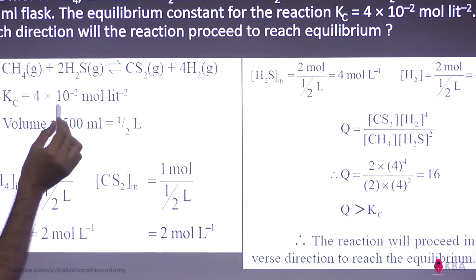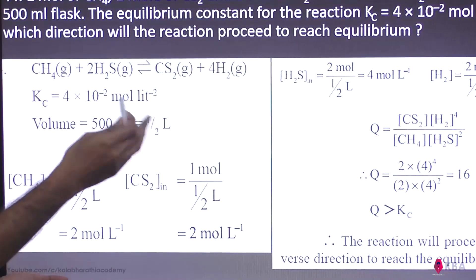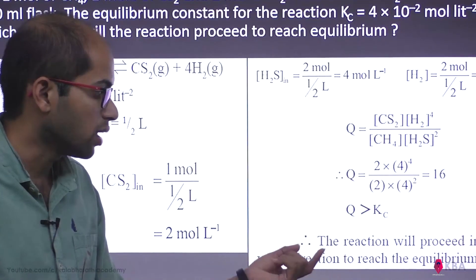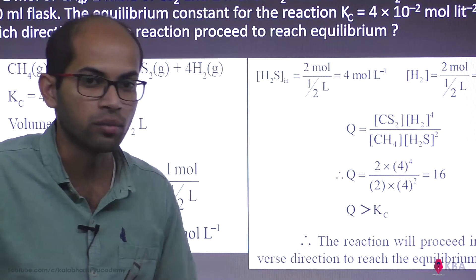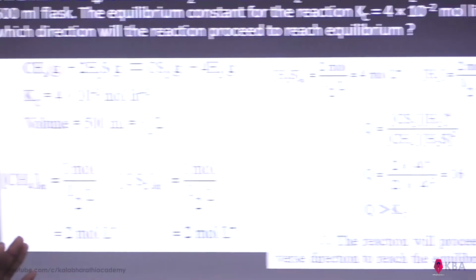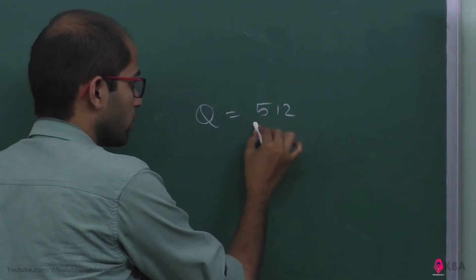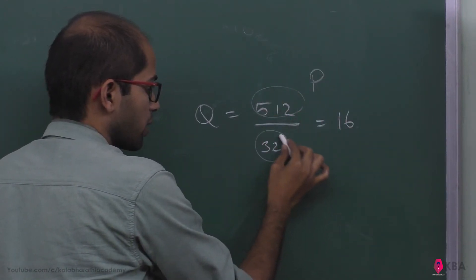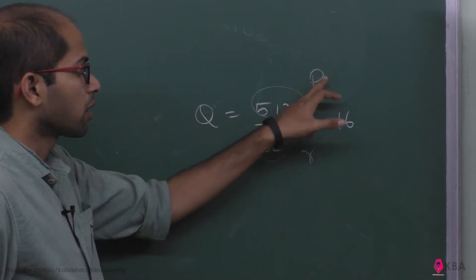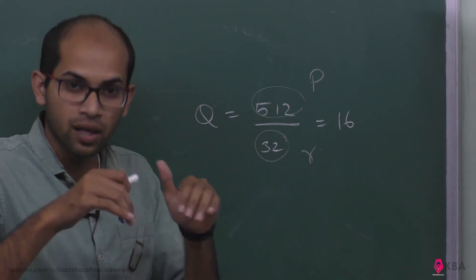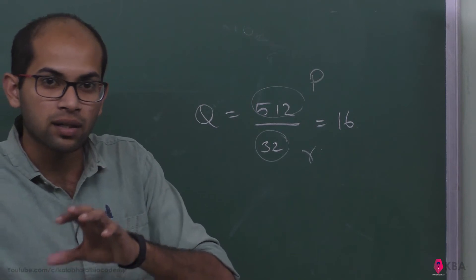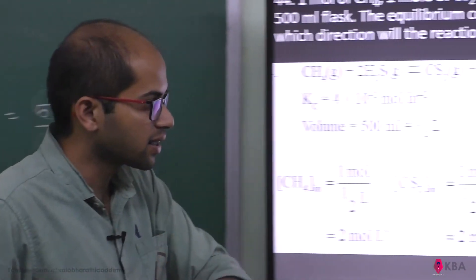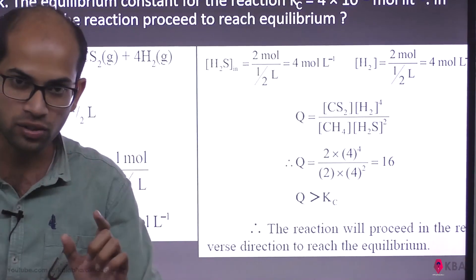The Kc value is 4 × 10⁻², which is 0.04. The Q value is 16. Since Q (16) is greater than Kc (0.04), the reaction will proceed in the reverse direction to reach equilibrium.